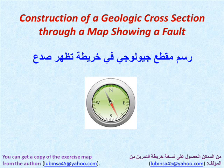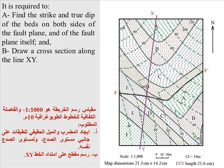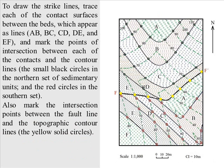Construction of a geologic cross-section through a map showing a fault. The adjacent figure shows a hypothetical geologic map with two sets of beds: A to E on the northern part of the map, and A to F on the southern part. The two sets are separated by line FF′, representing the trace of the fault plane on the earth's surface. The map scale is 1 to 1000 and the contour interval is 10 meters. It is required to: (a) find the strike and true dip of the beds on both sides of the fault plane and of the fault plane itself, and (b) draw a cross-section along line XY.